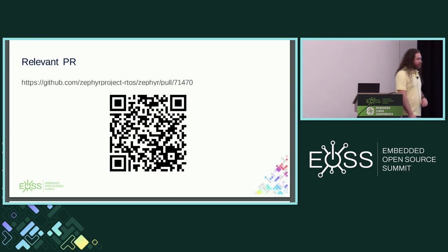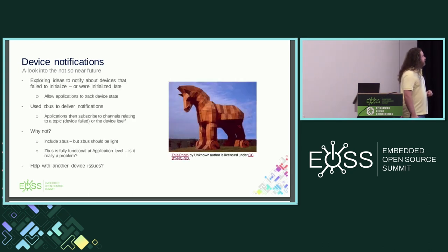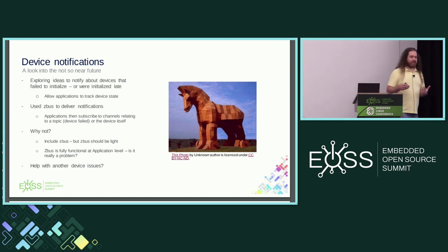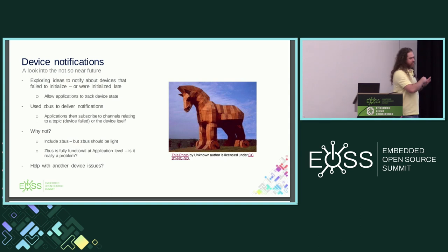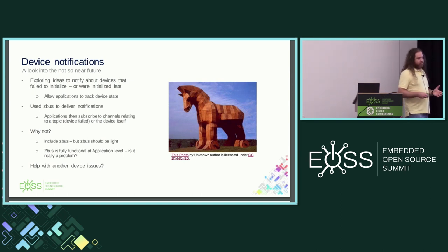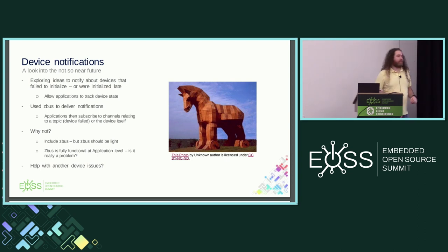For the not-so-near future, I was prototyping some ideas. I wanted a way to notify the application that some devices failed initialization. You can do that right now — there's an API to get the first device in the array, iterate over it, and check the state and init results — but I wanted a simpler API where the application subscribes to a topic and gets that information. We have zbus which does exactly that, so I tried it and it seems to work.